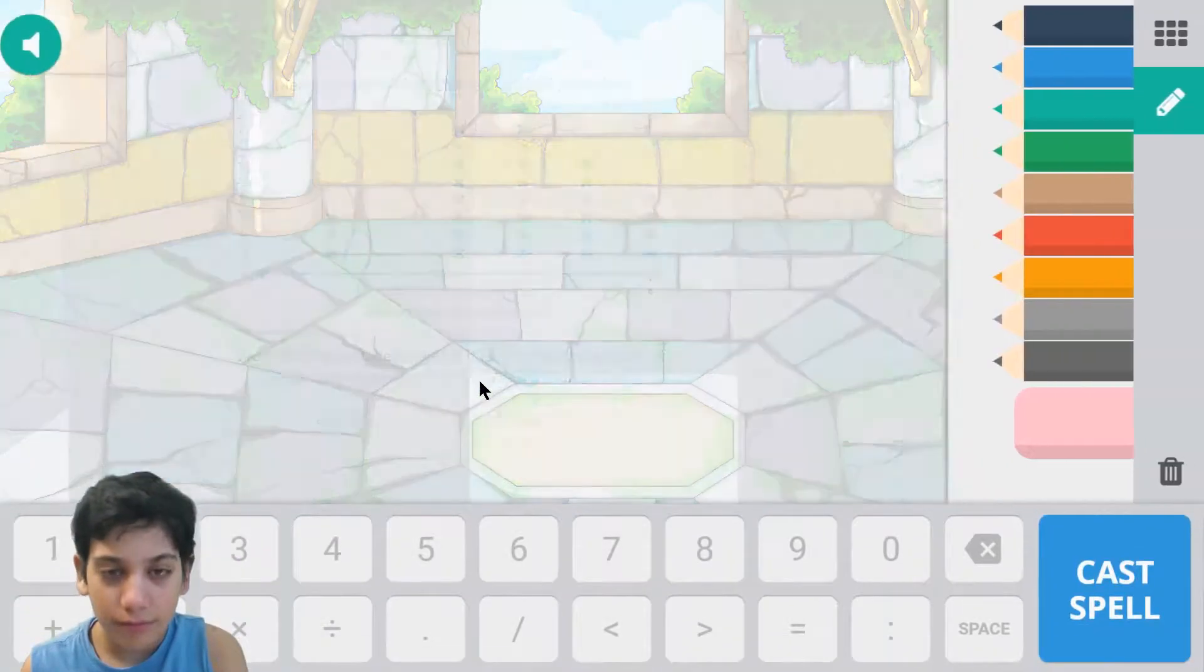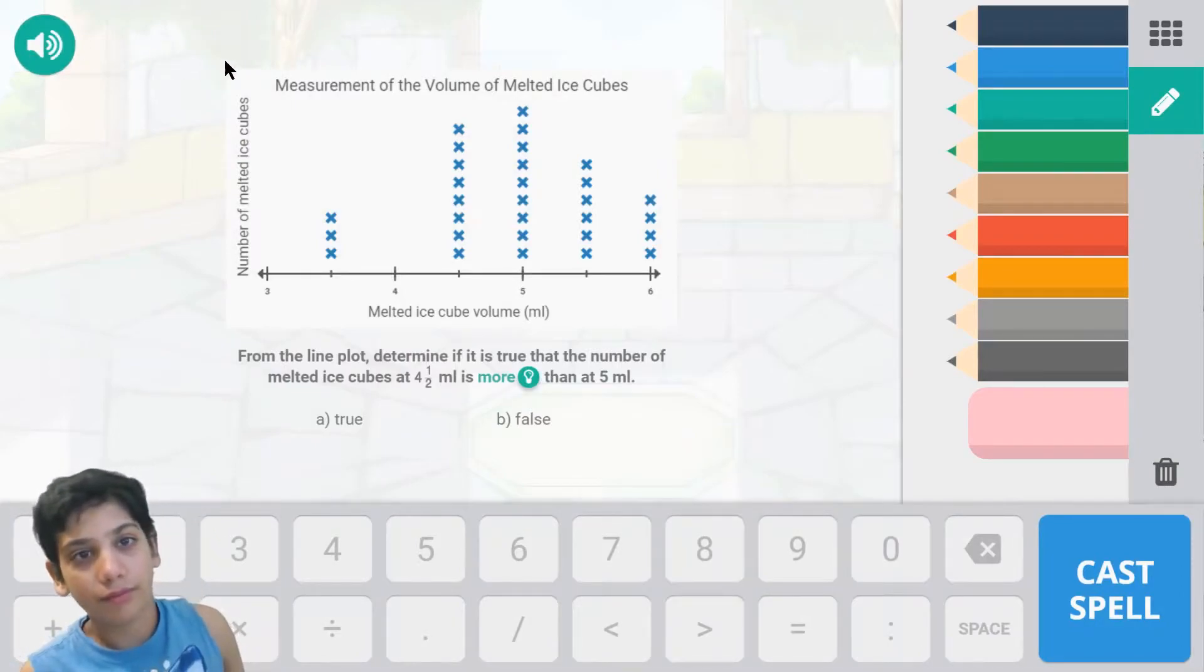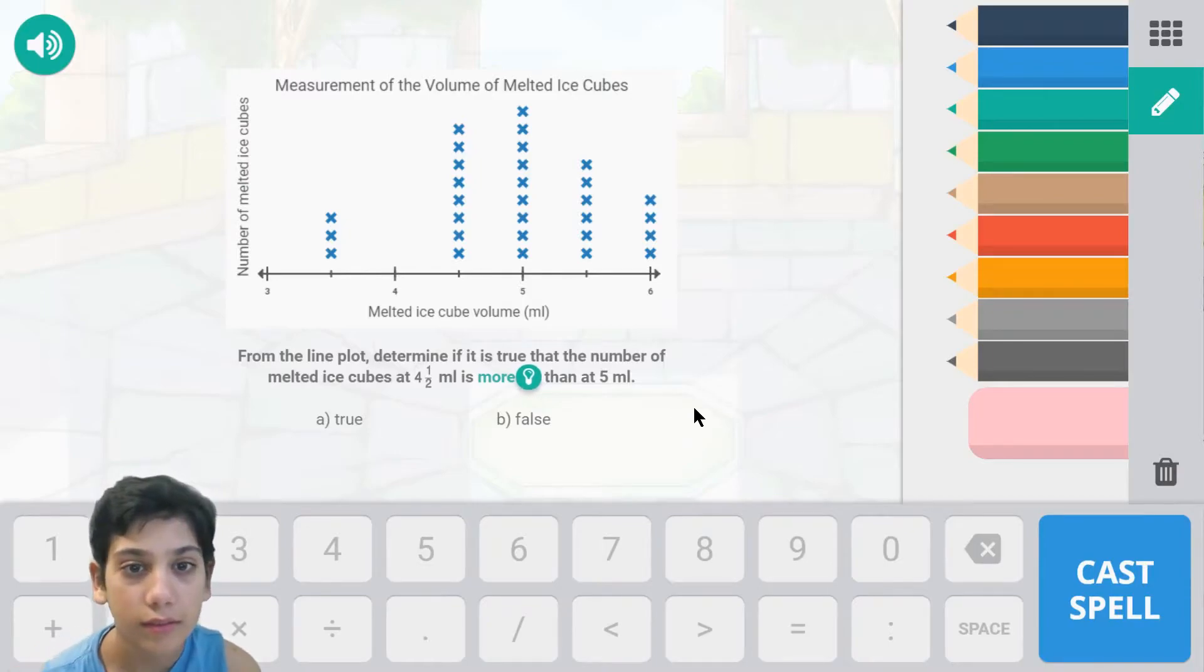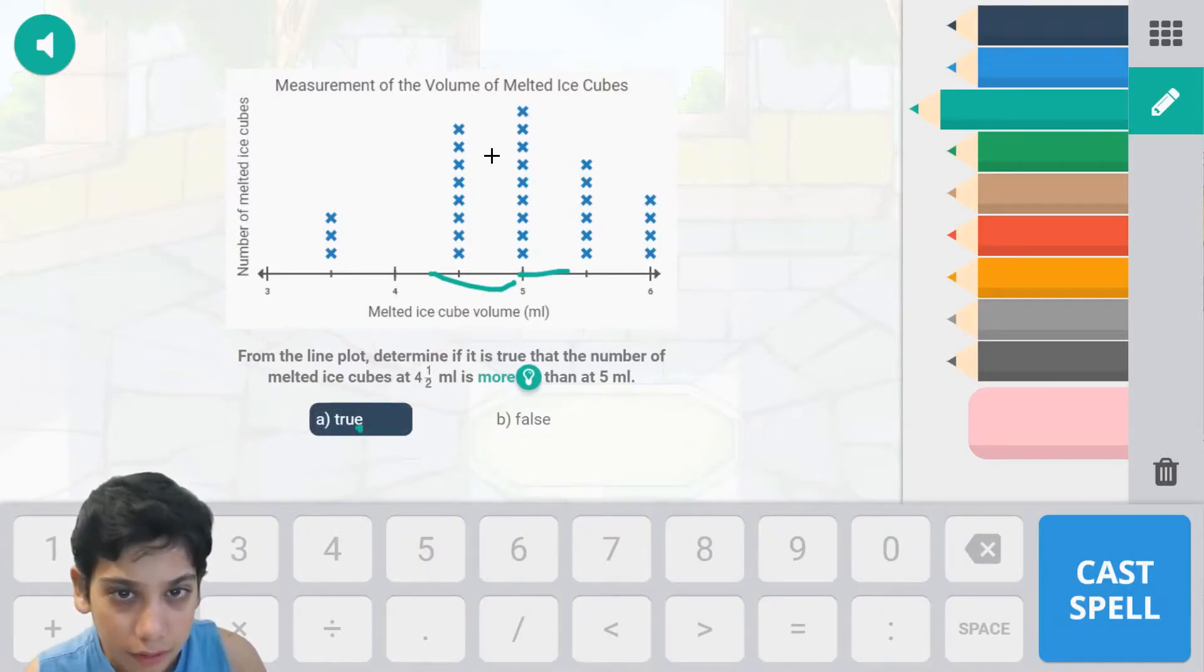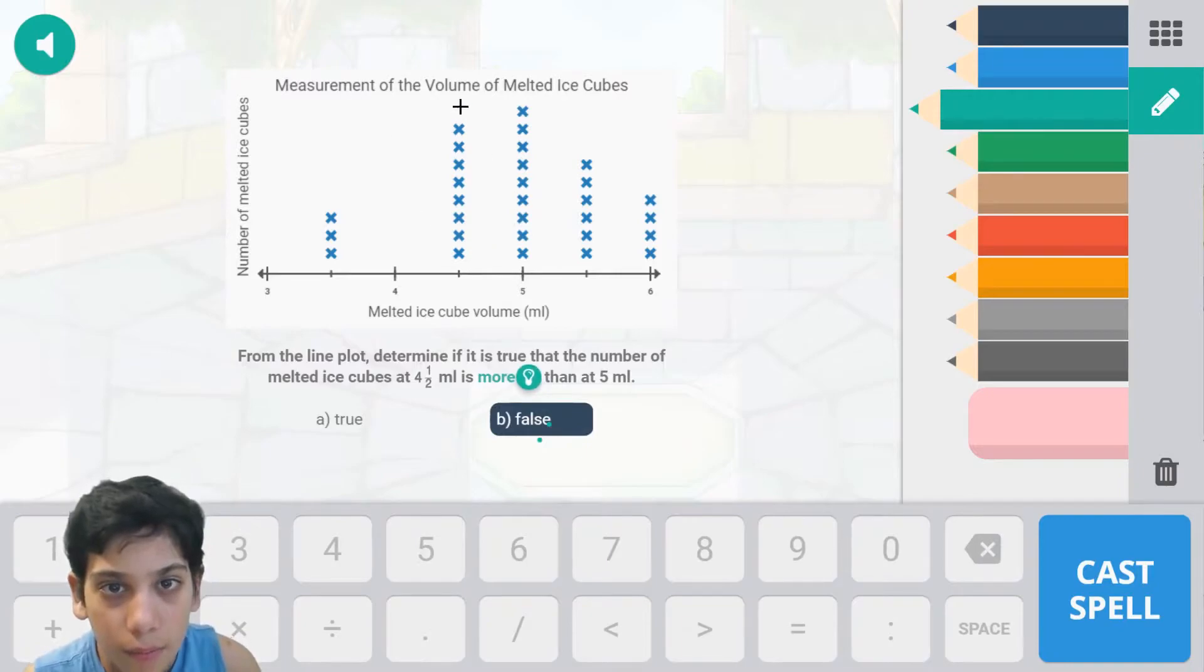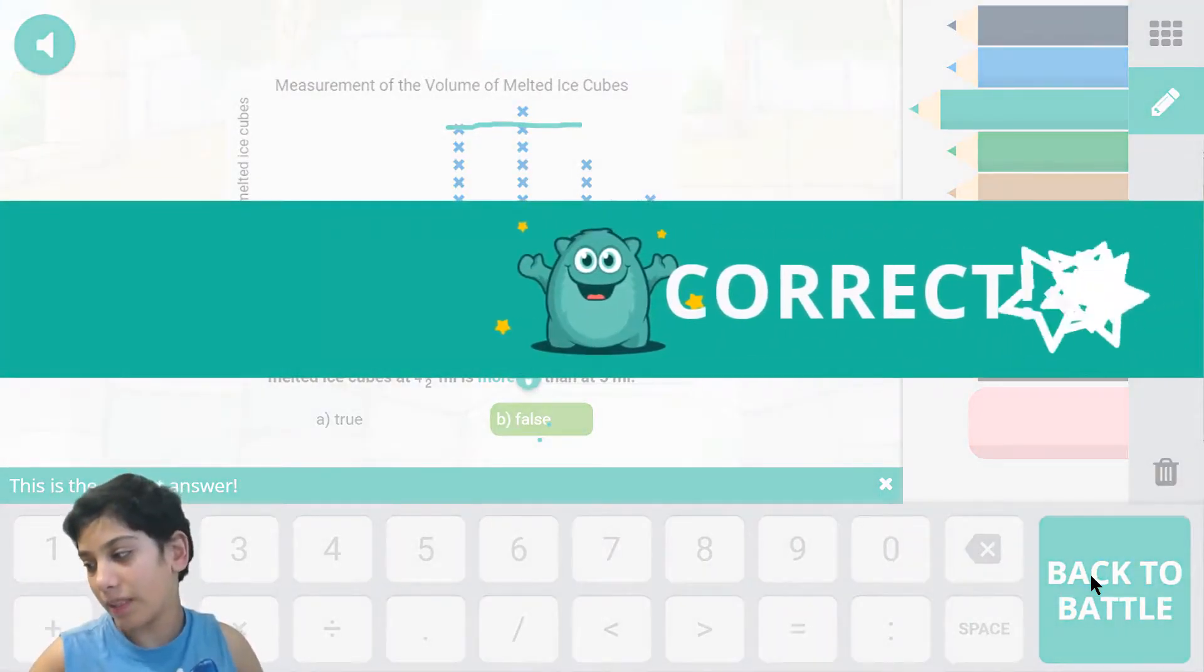Let's click attack and conjure. From the line plot, determine if it is true that the number of melted ice cubes at 4 and a half millimeters is more than 5 millimeters. A: true, B: false. The statement is false because 4 and a half has one less than 5. So let's cast spell.